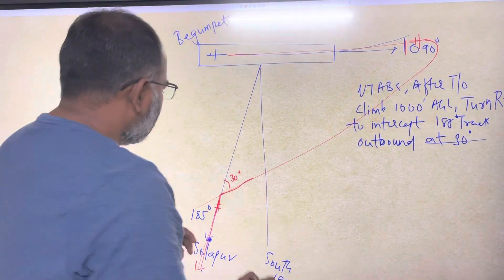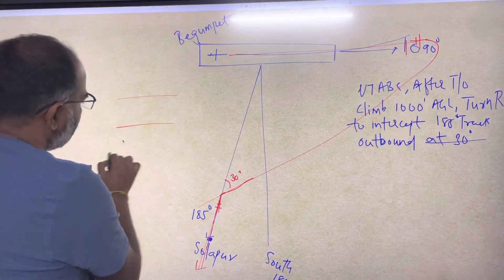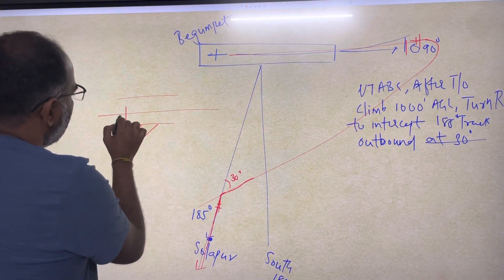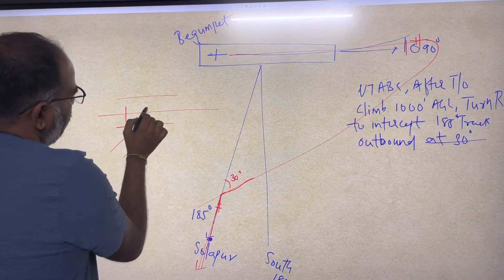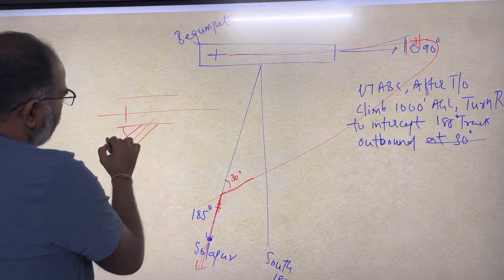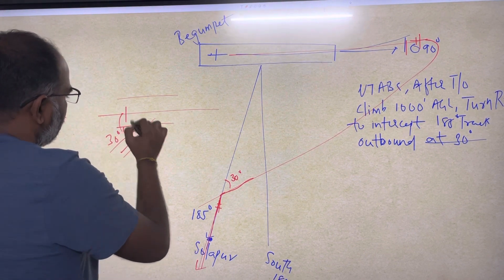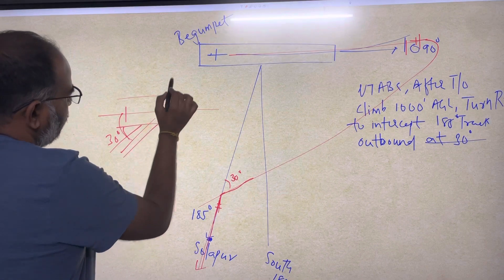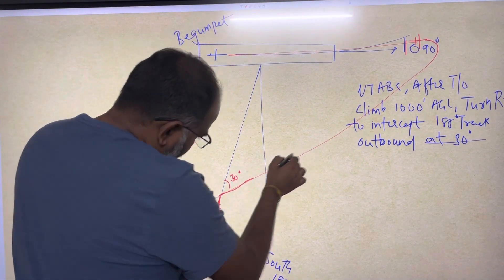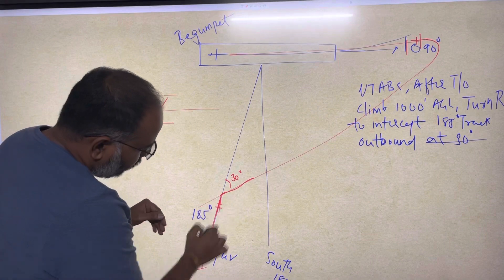Think of it like a bigger highway and a smaller highway — this is an intercept angle of 30 degrees. The angle between the bigger road and the smaller road — the same way you are intercepting the track to Solapur at an angle of 30 degrees. That is your intercept angle.